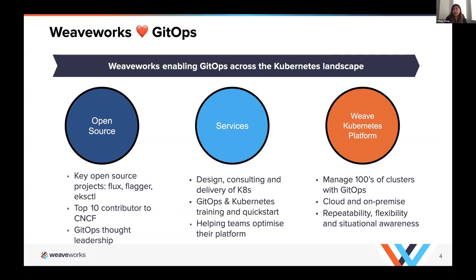Our engineers are also active contributors to other open source projects, such as Prometheus and Kubernetes special interest groups, and CNCF projects like Cluster API. We fundamentally support and contribute to open source cloud native. We also provide many services to help teams take advantage of cloud native and all the technologies involved. We're pragmatic and focused on accelerating success, focused on design, consulting, and delivery of Kubernetes, and helping teams adopt GitOps and Kubernetes through training, and ultimately assisting and optimizing your platforms.